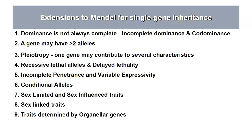Mendel didn't observe conditional alleles, in which the phenotype of a given genotype is influenced by environmental conditions. He didn't observe sex-limited and sex-influenced traits, mainly because pea plants have both male and female reproductive structures in the same flower. For that same reason, he didn't observe sex-linked traits, as pea plants don't have sex chromosomes. And he didn't observe traits determined by genes in the organelles — for example, both mitochondria and chloroplasts have genes that can result in traits.